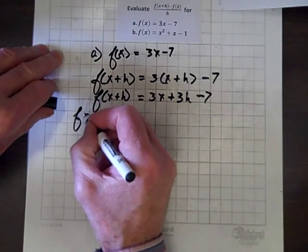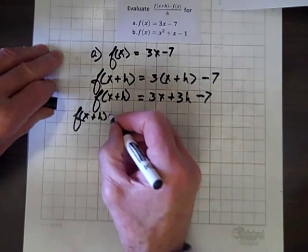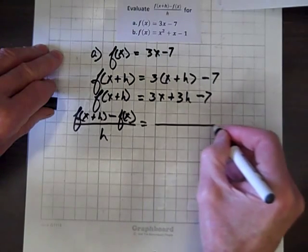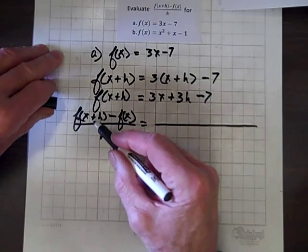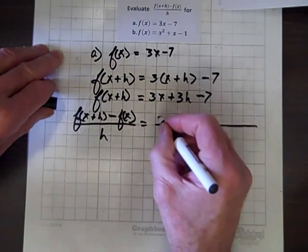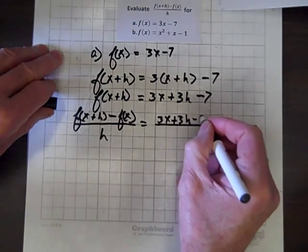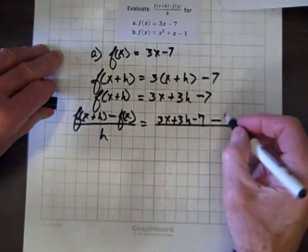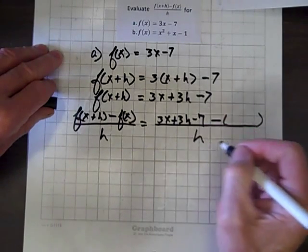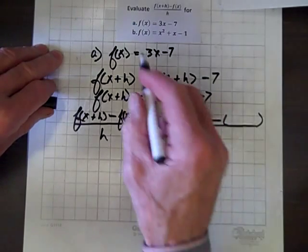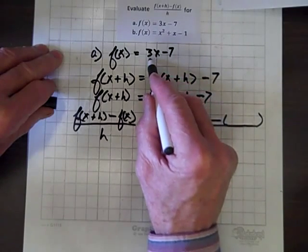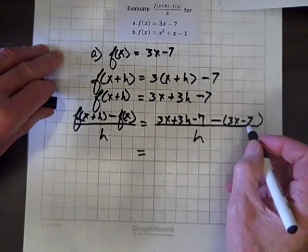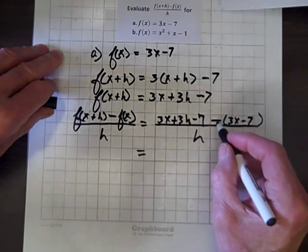Now we set up [f(x+h) minus f(x)] all over h. In place of f(x+h) we install its identity: 3x plus 3h minus 7. Then we have a minus sign, and we install parentheses around f(x), which is 3x minus 7. We're dividing by h. Those parentheses are terribly important — they remind us that we must distribute that negative.